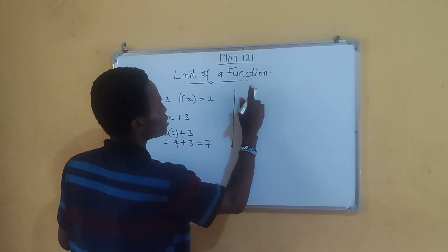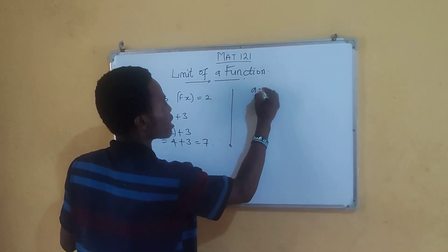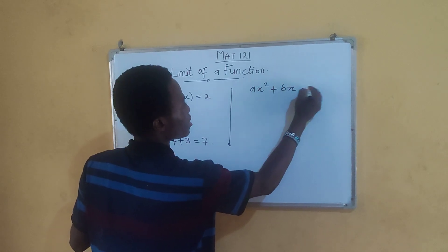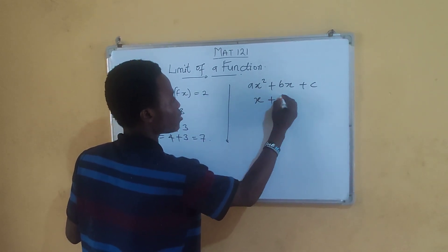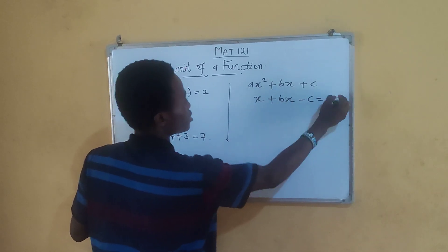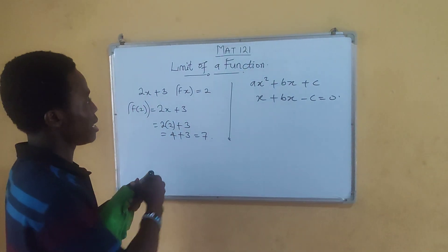On that limit itself, you can have the quadratic limits that can be in the form of ax squared plus bx plus c. You can have the linear limit of x plus bx minus c equals to 0, and so on.